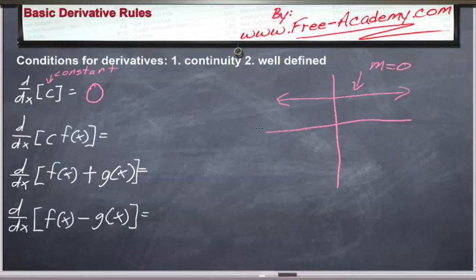It's always equal to zero anywhere you look at this. So the derivative of a constant, any constant, is always going to be equal to zero.